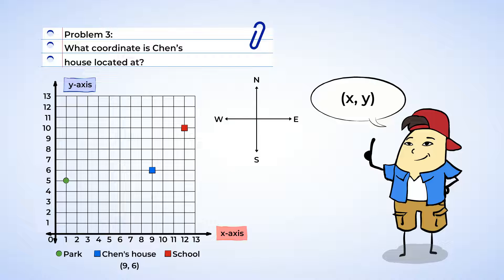Now, which location is south of Chen's house? Well, when we look at the compass, we can see that south is down. And the only location that is below Chen's house is the park. So the park is 1 unit south of Chen's house.